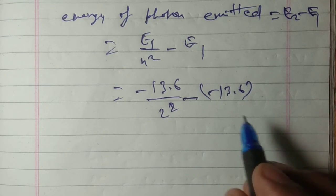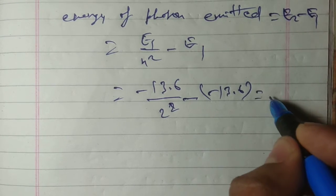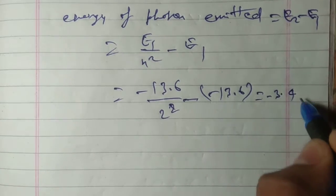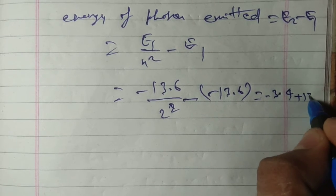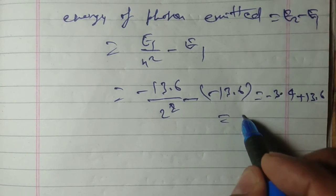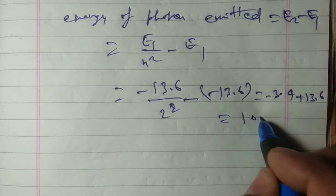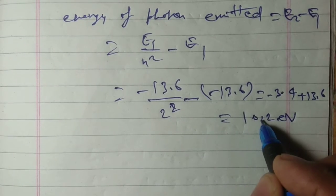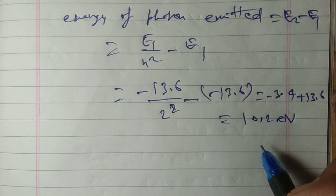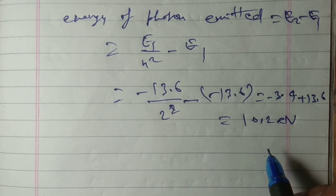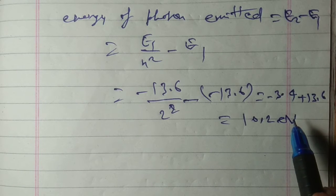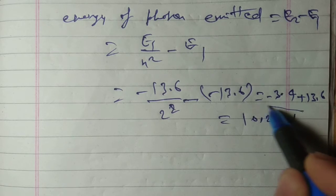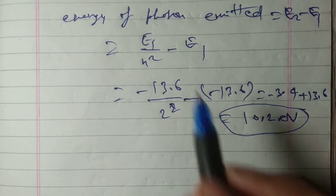Substituting the values, minus 13.6 divided by 4 gives minus 3.4 electron volt, and E1 is plus 13.6 electron volt. So the energy of the emitted photon is 10.2 electron volt. This is the energy of the photon emitted when the electron jumps from n equal to 2 to n equal to 1, and this is one of our answers.